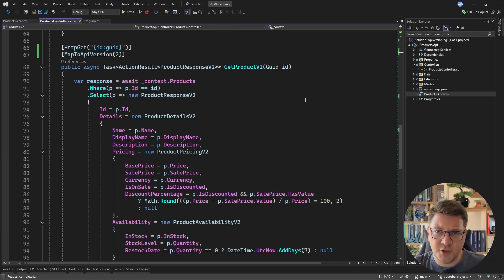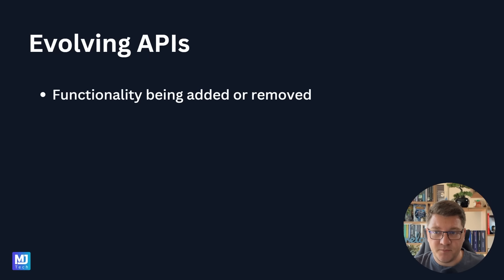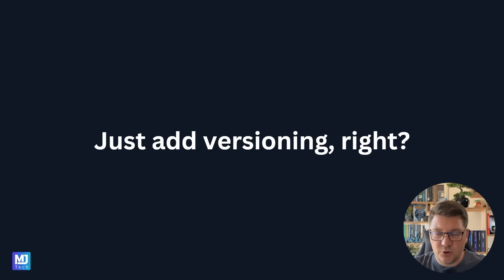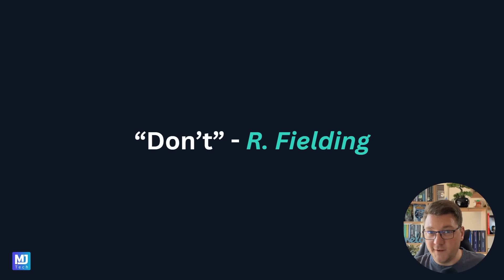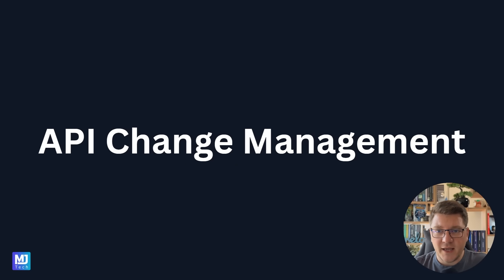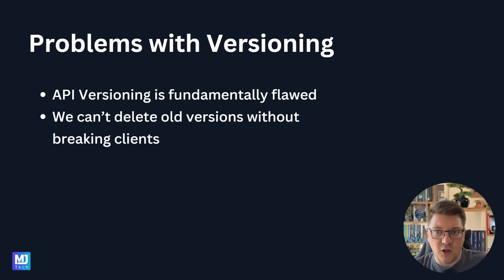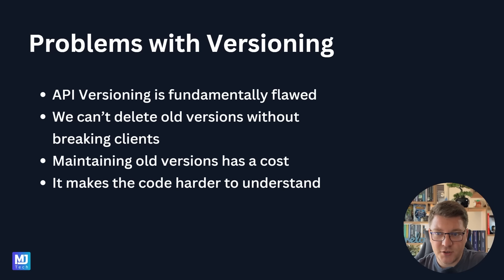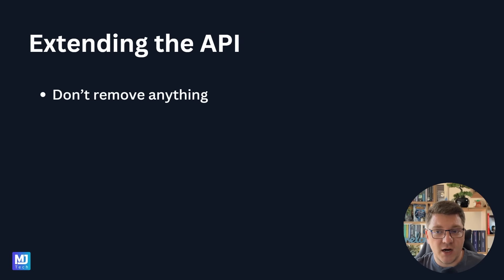Now let's talk about API versioning and why you might not want to use it. It's natural and expected that we may want to evolve our APIs — functionality is constantly being added or removed, business rules are constantly changing, and representations of our resources are evolving over time. The consensus is that we should just add versioning, right? Well, maybe not. Here's what Roy Fielding, the creator of REST, has to say when asked about API versioning: his response was simply, 'Don't.' The default approach to API versioning is fundamentally flawed — we can't really delete old versions without breaking clients, maintaining old versions has a cost, and having multiple paths in your code represented by multiple API versions makes your code harder to understand.